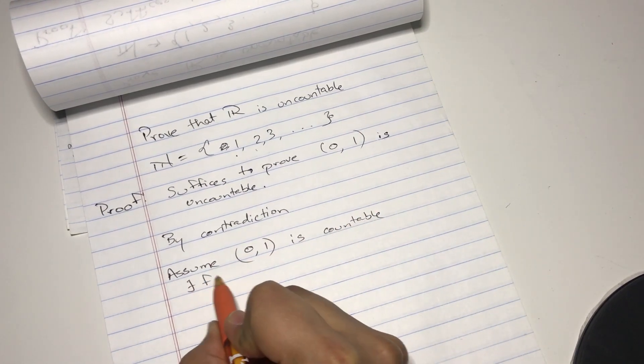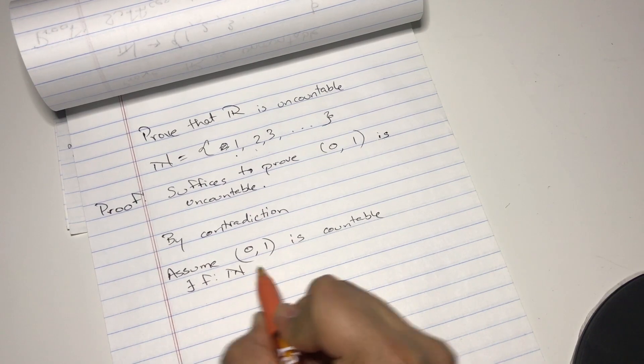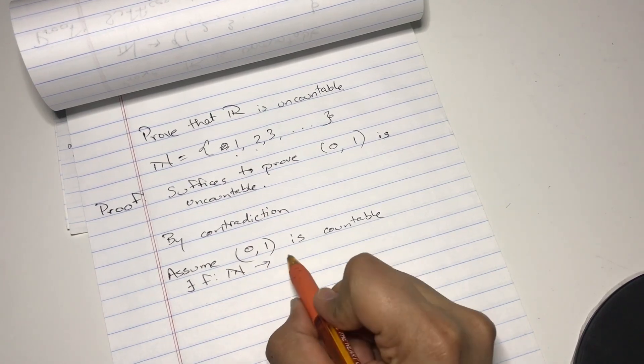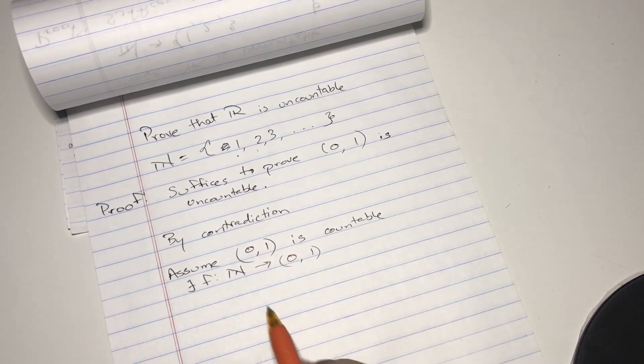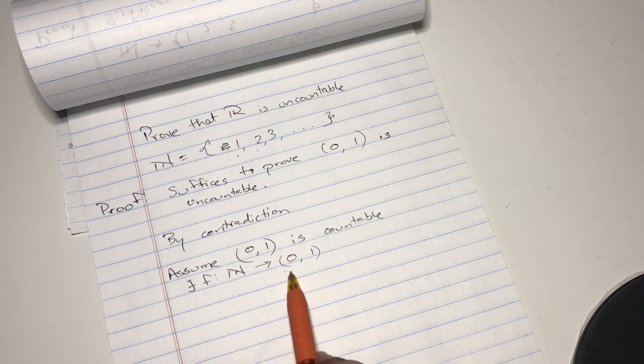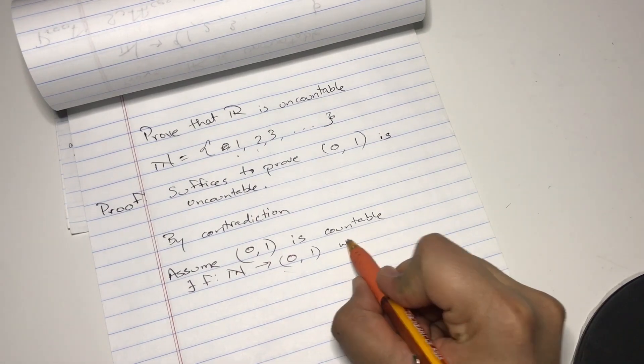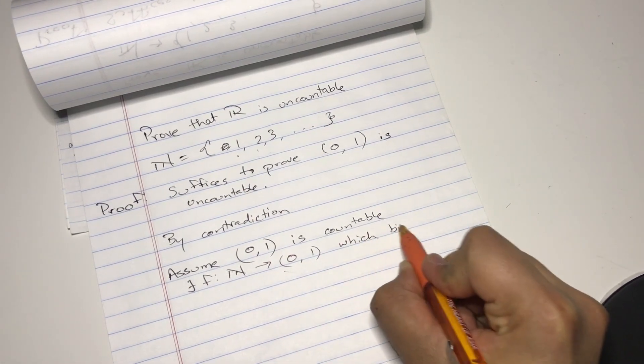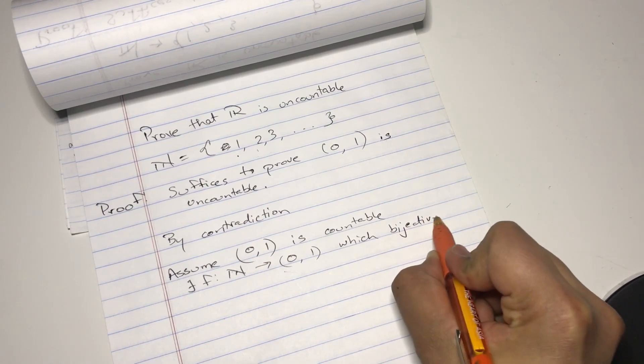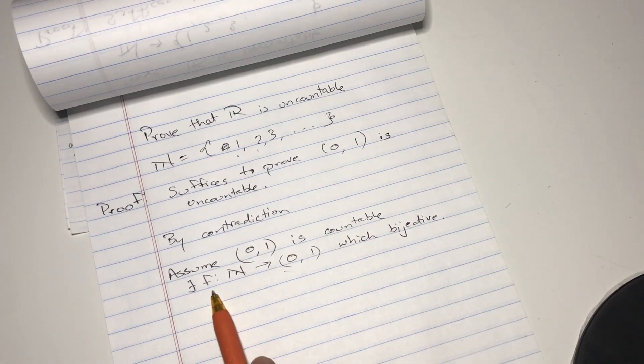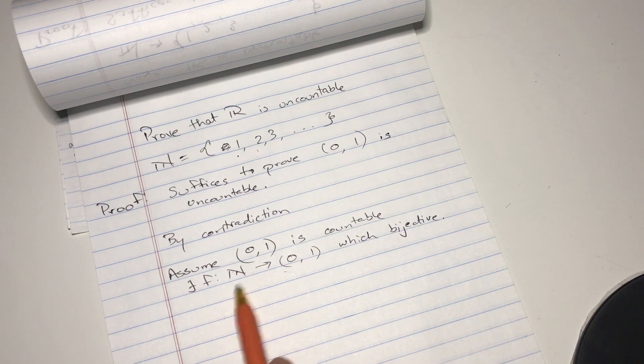So there exists a function which has a one-to-one relation between the range of zero to one, all the real numbers, which is bijective. Basically bijective means one-to-one. You could get any number from here and it would correspond to a unique number in this range.